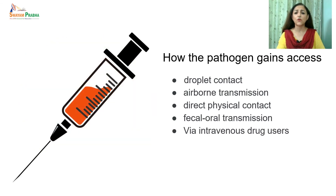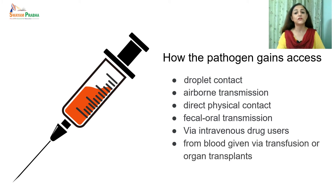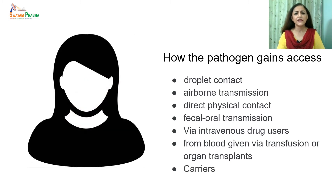Transmission also happens through the intravenous route — if the person is a drug user or blood transfusion or organ transplantation has occurred where blood has been exchanged. Lastly, carriers can spread infections — infected persons who do not show any visible symptoms but continue to spread the infection through direct or indirect contact with healthy persons.